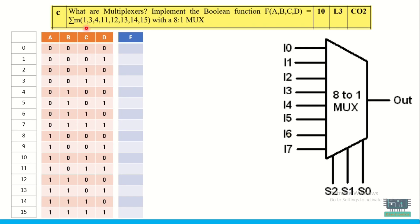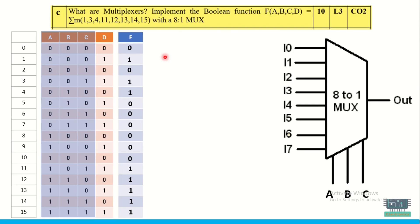For the output, wherever a 1 is needed — that corresponds to minterms 1, 3, 4, 11, 12, 13, 14, and 15 — I write 1. For the remaining positions I write 0. Now after filling the truth table, I need to select the select lines.